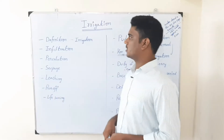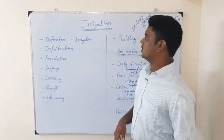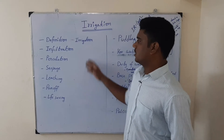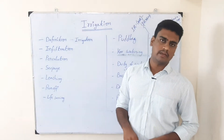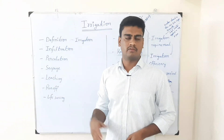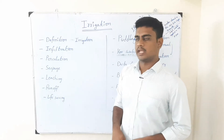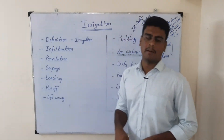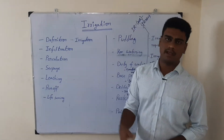Hello students. In this class I would like to explain the topic called irrigation and the terms which are related to irrigation. First of all, let us see the meaning or the definition of irrigation. Irrigation is nothing but the artificial application of water to the field. Natural application of water is nothing but precipitation or rainfall, but irrigation involves artificially applying water to the field.